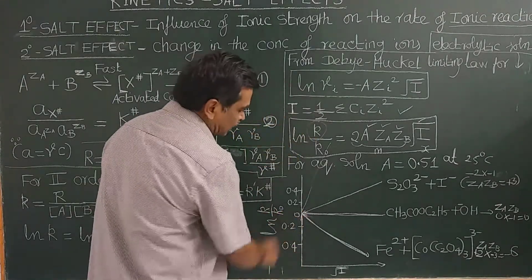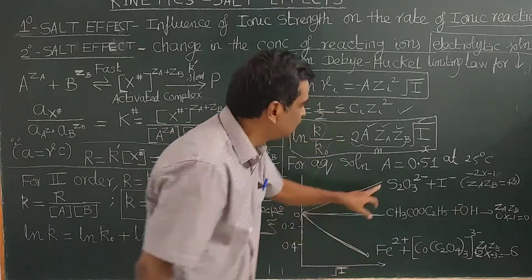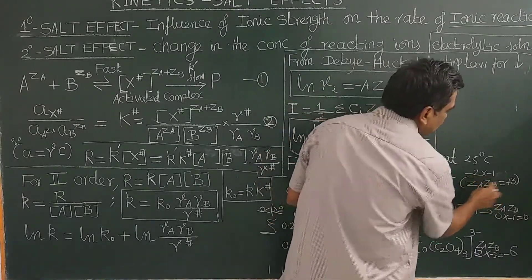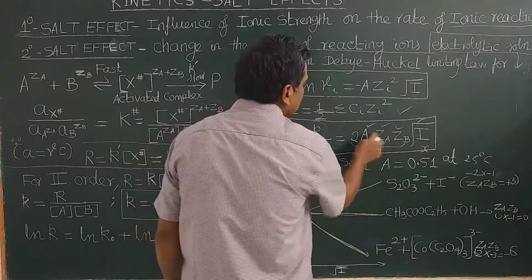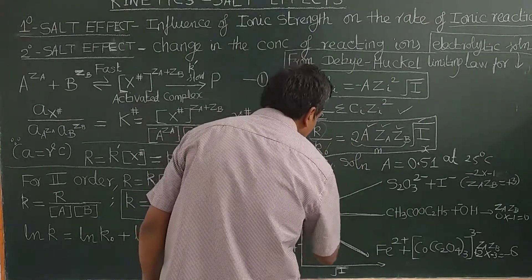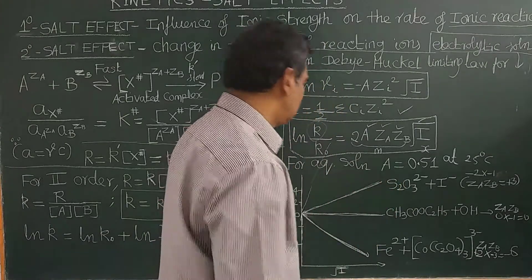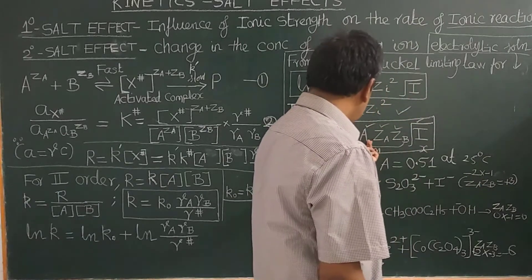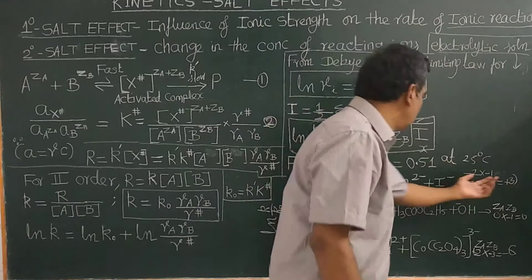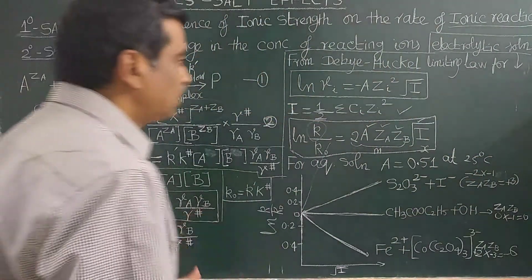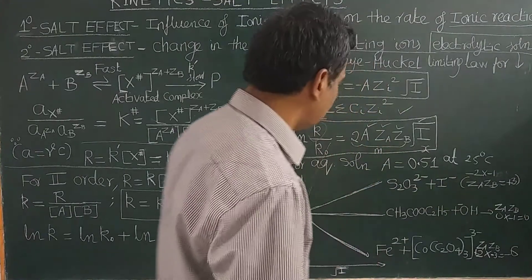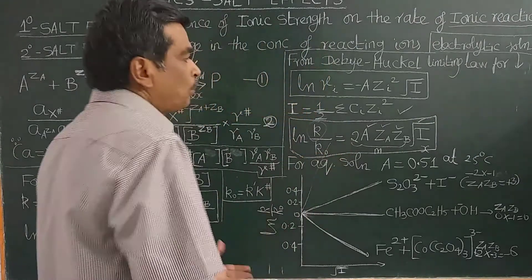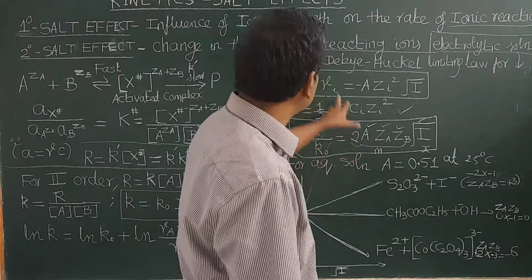This salt effect on the reaction of thiosulfate ion plus I⁻ is carried out as a practical in PG inorganic chemistry. Here ZA is −2 and ZB is −1, so ZA·ZB = +2. Therefore ln(K/K₀) will be positive, meaning the rate constant increases with increasing ionic strength — the slope will be positive, equal to 2A·ZA·ZB = 2 × 0.51 × 2. We can calculate the slope from this.